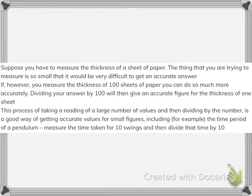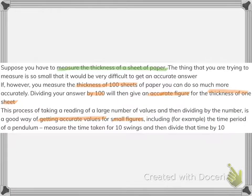For multiple readings: for example, if you're given a question to measure the thickness of a sheet of paper, your answer needs to be accurate. So first you measure the thickness of a hundred sheets of paper and then divide your answer by a hundred, which gives you an accurate figure for the thickness of one sheet. Similarly for a pendulum, you measure the time taken for ten swings and then divide that time by ten to find the accurate time period. This process of taking a large number of readings and dividing by that number is a good way of getting accurate values for small figures.